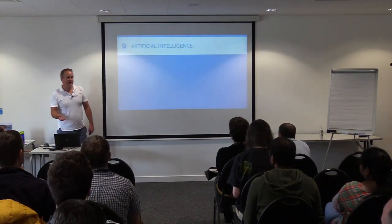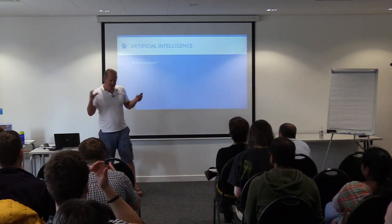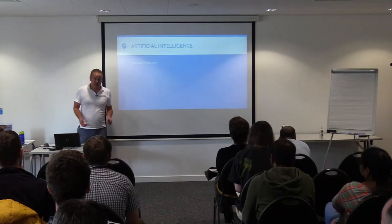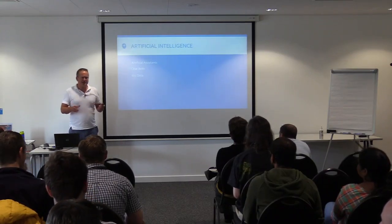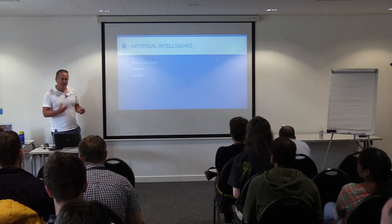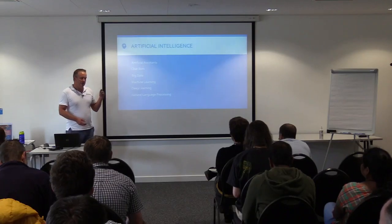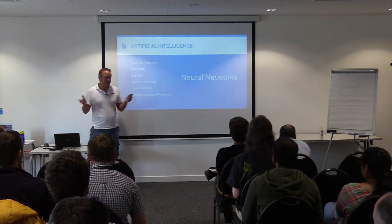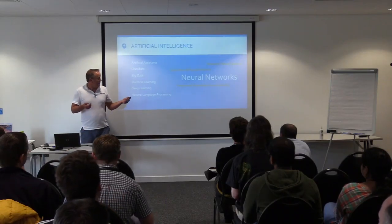So what is artificial intelligence? It's something that can learn. Things we consider AI include artificial assistants like Google Assistant, Siri, and Cortana. There are also chatbots, which you interact with more often than you think. We've started dealing with big data, using AI to crunch it and give us information we didn't see before. This uses machine learning, deep learning, and natural language processing — and what all these things have in common is they're all using neural networks.